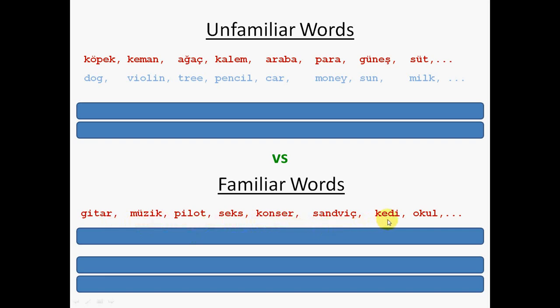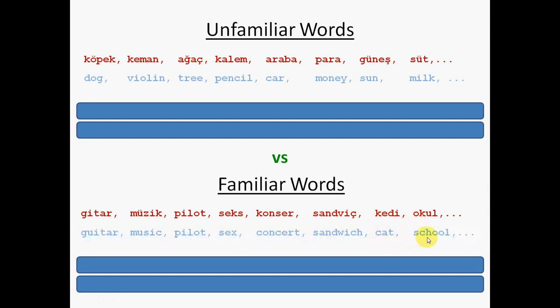So let me give you some hints. Catty is an animal which has a sound meow. And Okul is where students go to get formal education. So here they are. As you can see, the English words are very similar if not exactly the same.